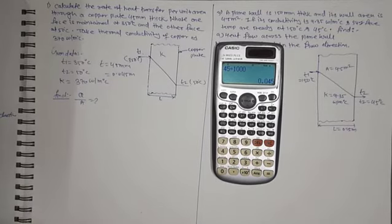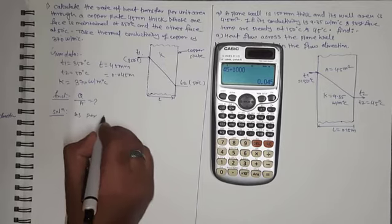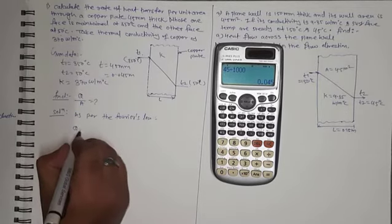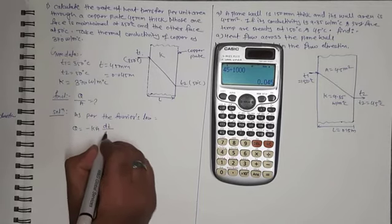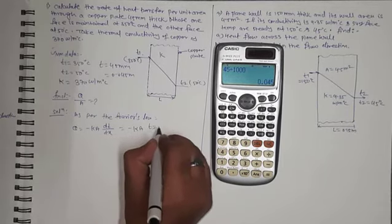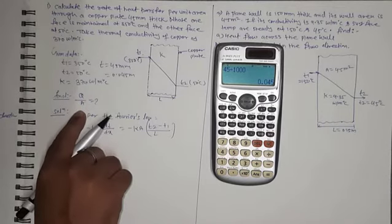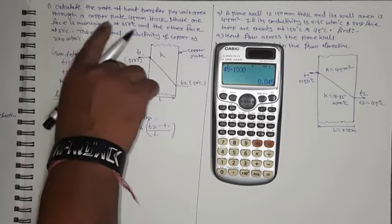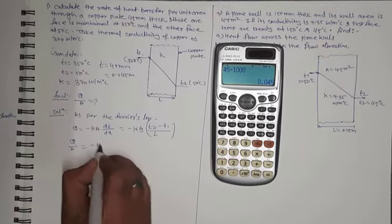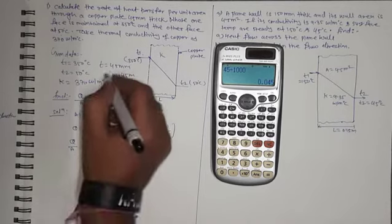As per Fourier's law, Q is equal to minus K into A into dT by dx, which can also be written as minus K into A into (T2 minus T1) upon L. To calculate Q by A, the rate of heat transfer per unit area flowing through the copper plate, dividing both sides by A gives: Q/A equals minus K into (T2 minus T1) upon L.